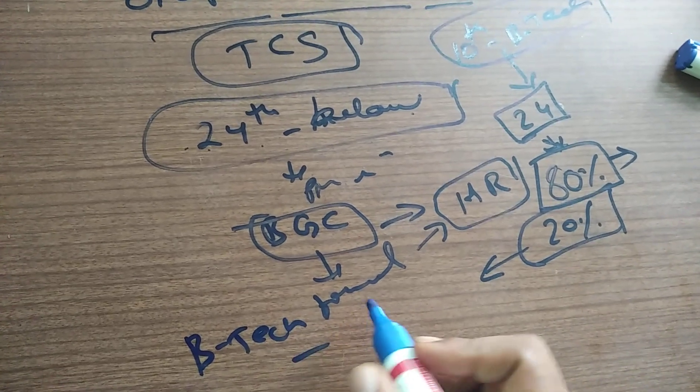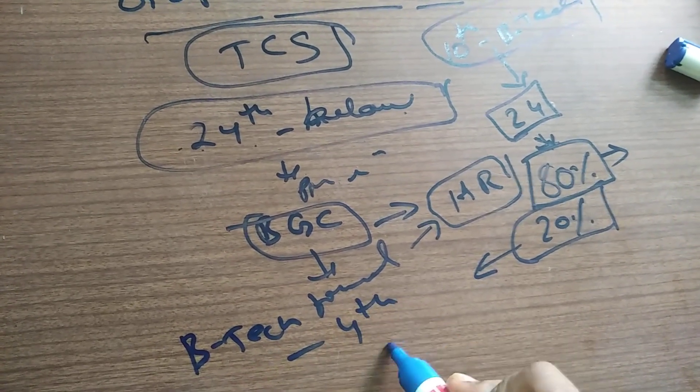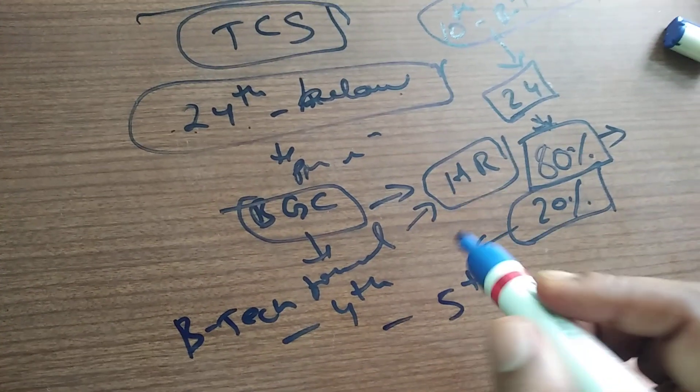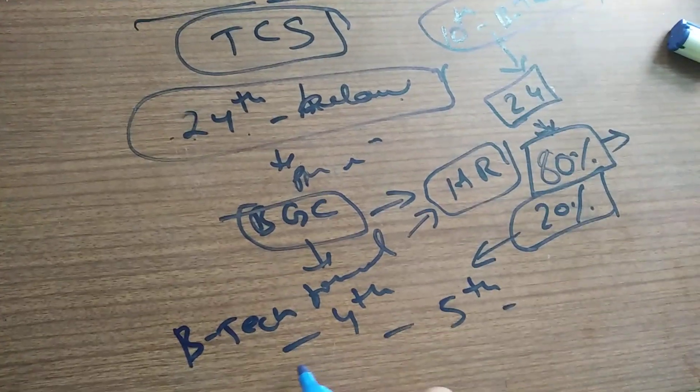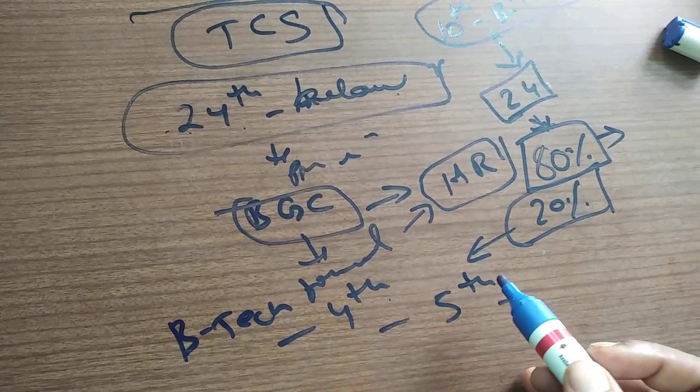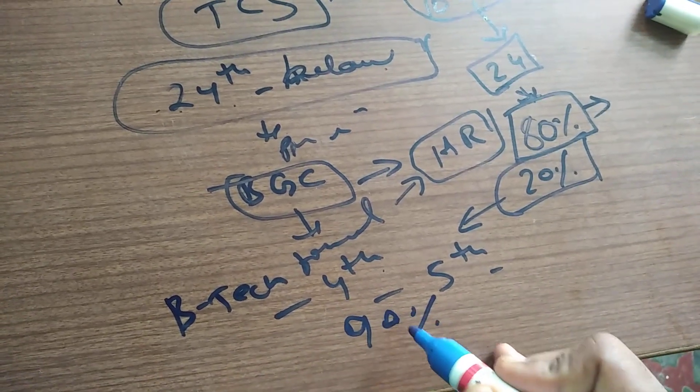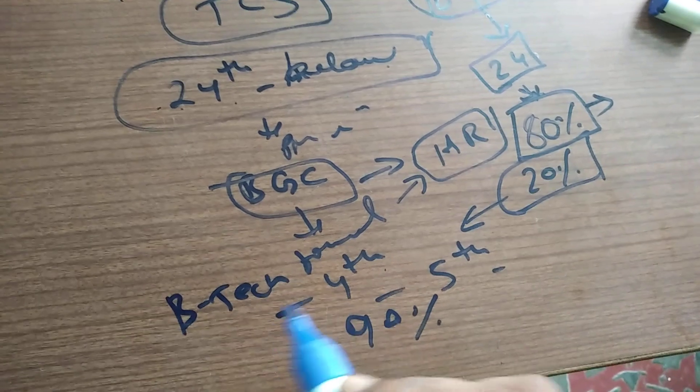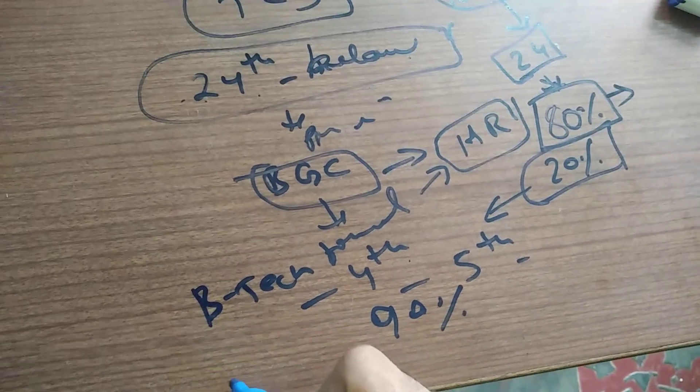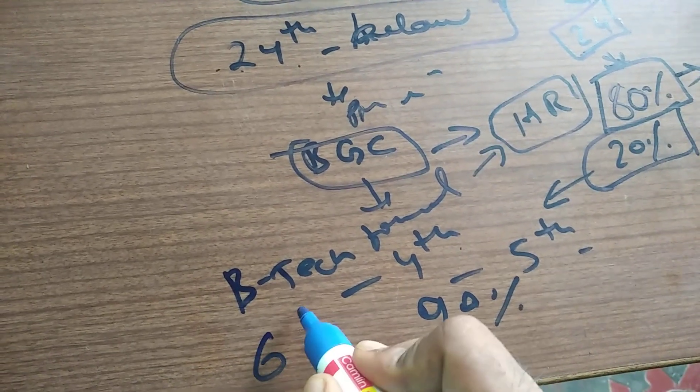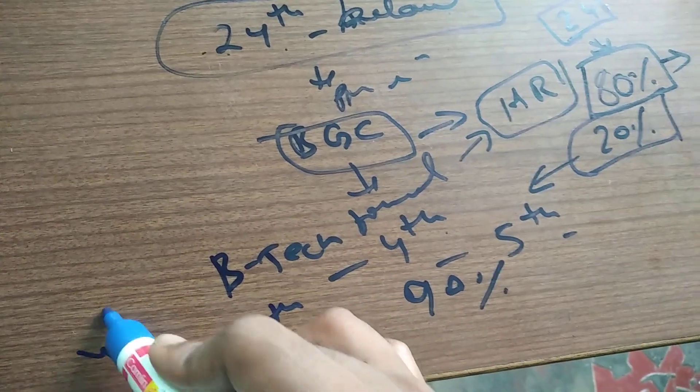Many people are asking me: I completed my subjects after BTech, after careers. BTech is four years, right? You completed it in the fifth year. I'll be telling you that if you have backlogs after fourth year, in BGC portal there is a 90 percent chance of rejection guys.